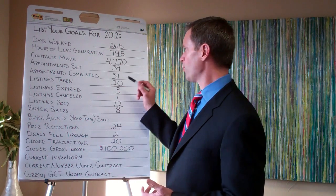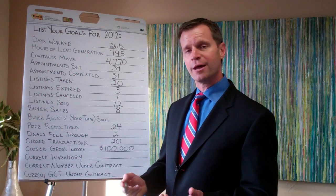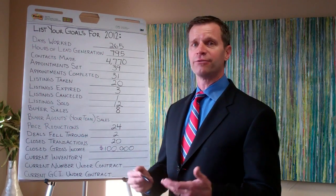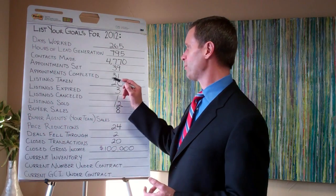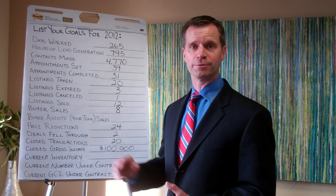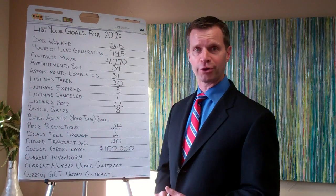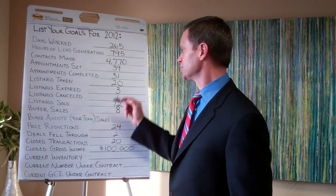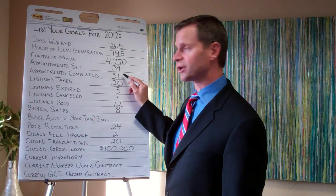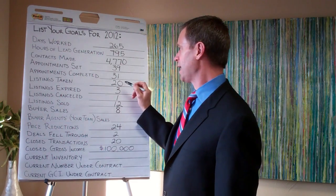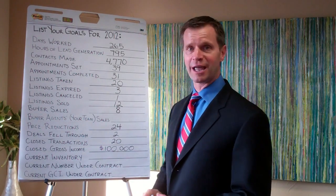Then we go back up one more — the appointments set. We determine that number using 80%. Out of 80% of the appointments you set, you should be going on 31 of those listings. So that new number is going to be 39. So we now have 39 appointments set, 31 appointments completed, and 20 listings you're going to take for the year.